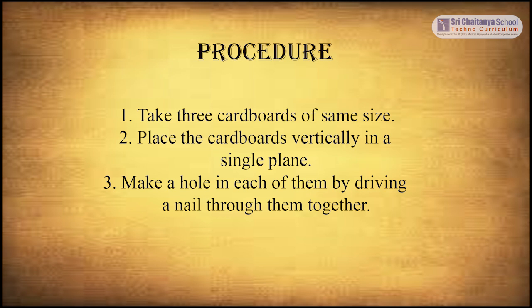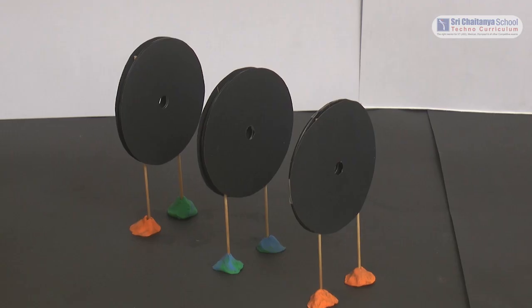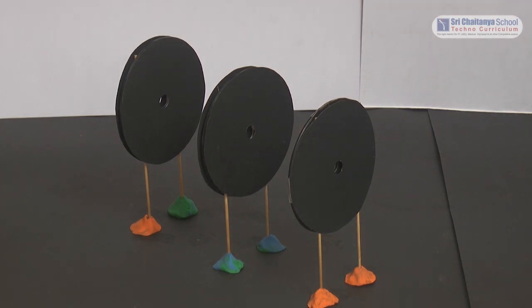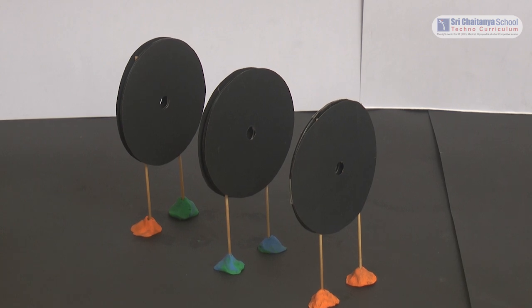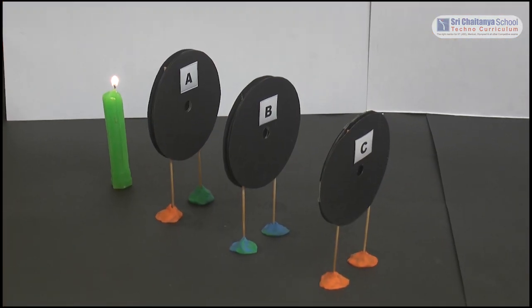Now it is time to see the procedure. Take three cardboards of the same size. Place the cardboards vertically in a single plane. Make a hole in each of them by driving a nail through them together. Keep each cardboard in a straight line using plasticine. Take a lighted candle and place it behind the last cardboard marked as A.